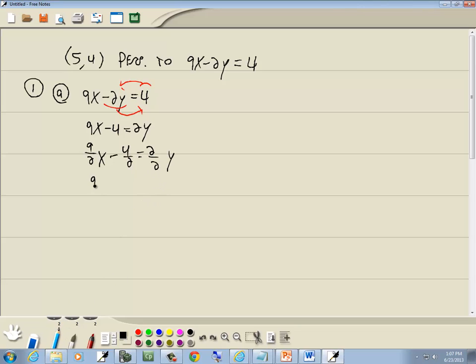That gives us (9/2)x - 2 = y. Now our next sub-step is to identify the slope. If you've got it in slope-intercept form, y equals the other side, then your slope is whatever's in front of x. So the slope is 9/2.